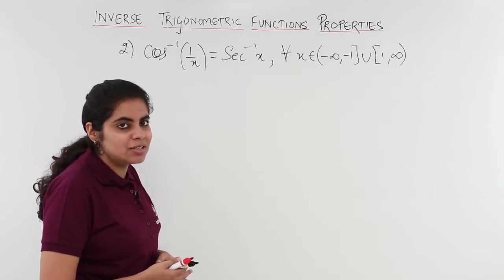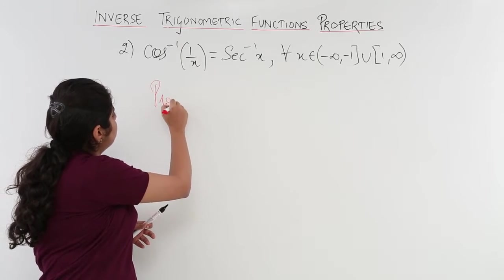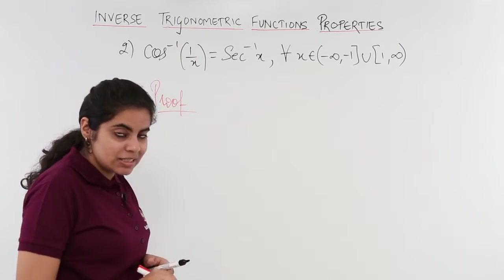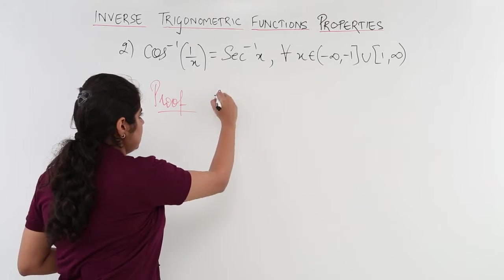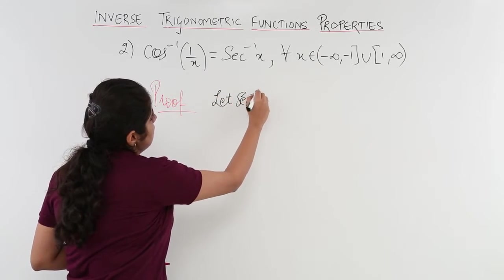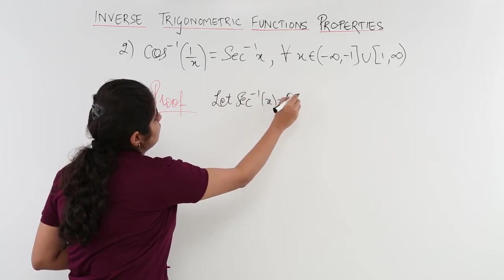Let's get started by proving the same. The proof goes somewhat like this. I have right inside as secant inverse x. Let secant inverse x is equal to theta.